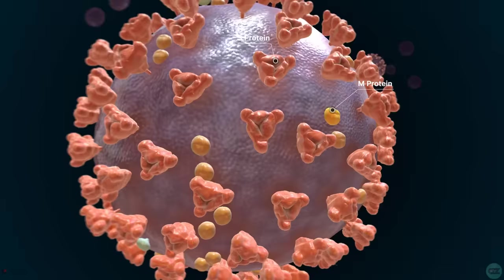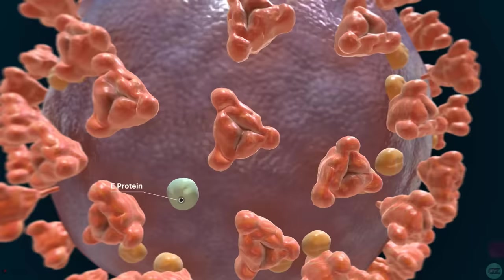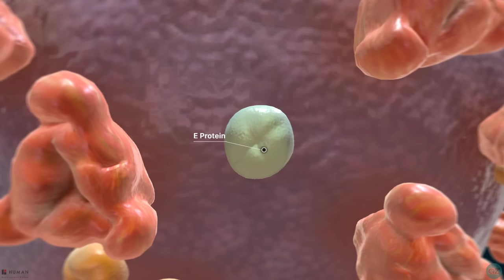Moving on to the E or envelope protein. This is the smallest of the major structural proteins on the viral membrane, which appears to have several roles. We know that it is integral in the assembly and release of the virus from host cells, and during viral replication, it is largely localised at the site of intracellular trafficking, more specifically at the endoplasmic reticulum and the Golgi apparatus.